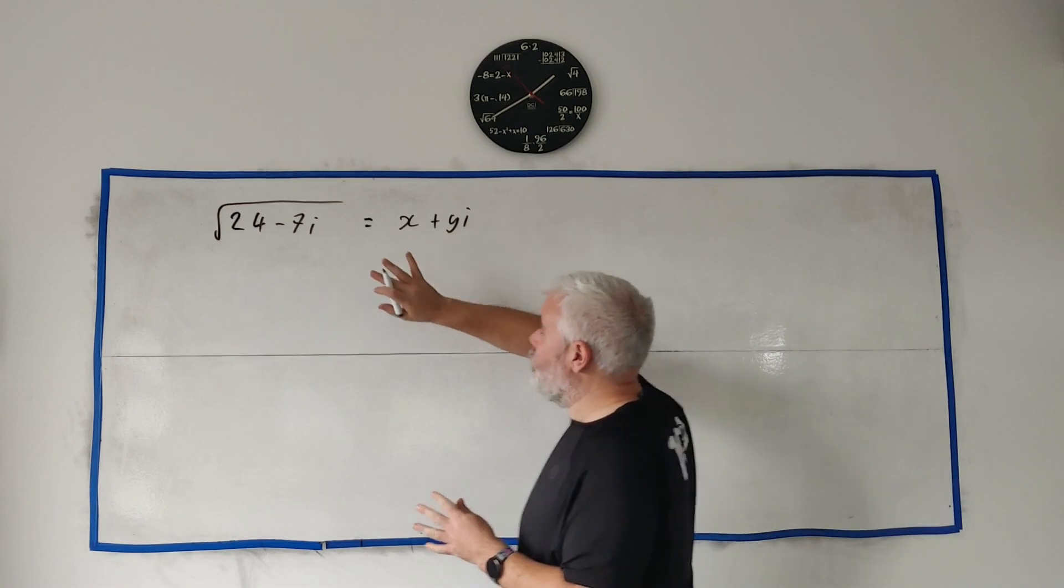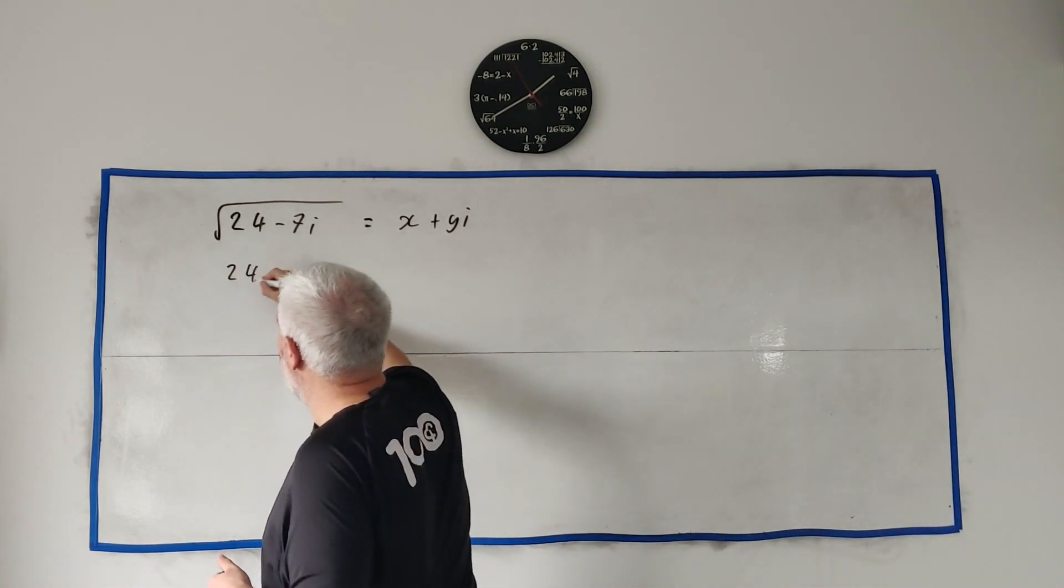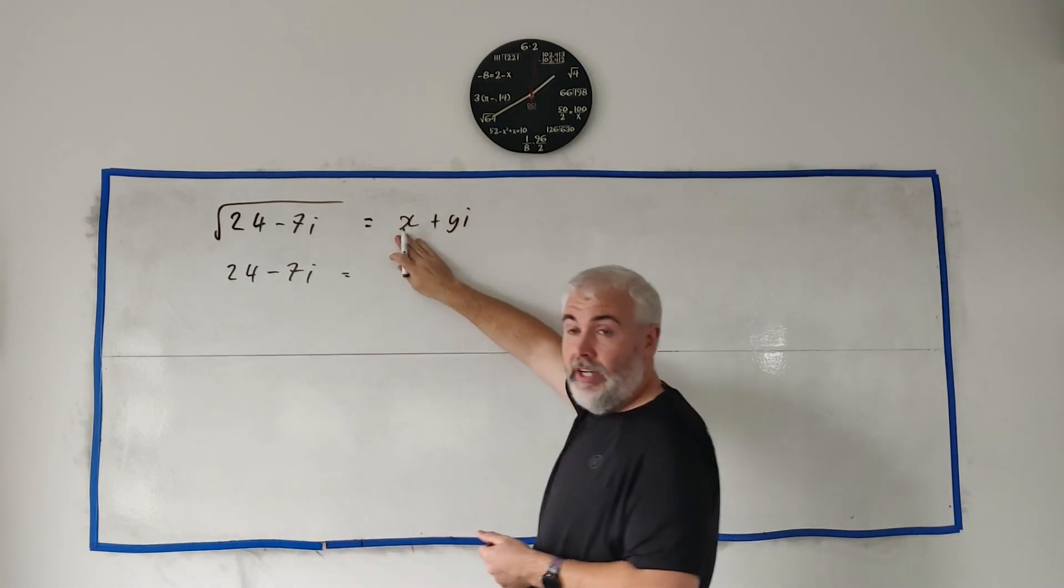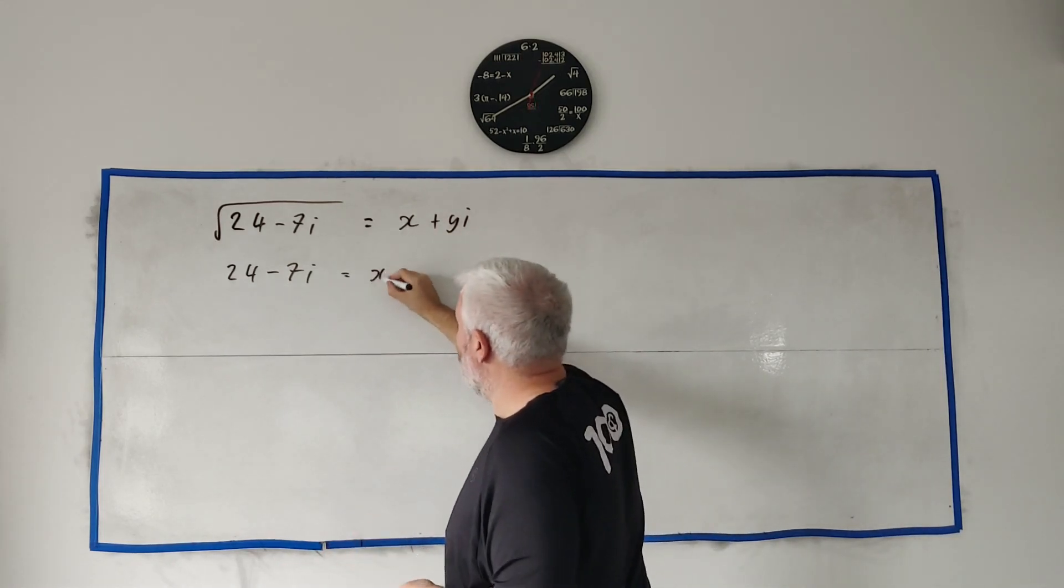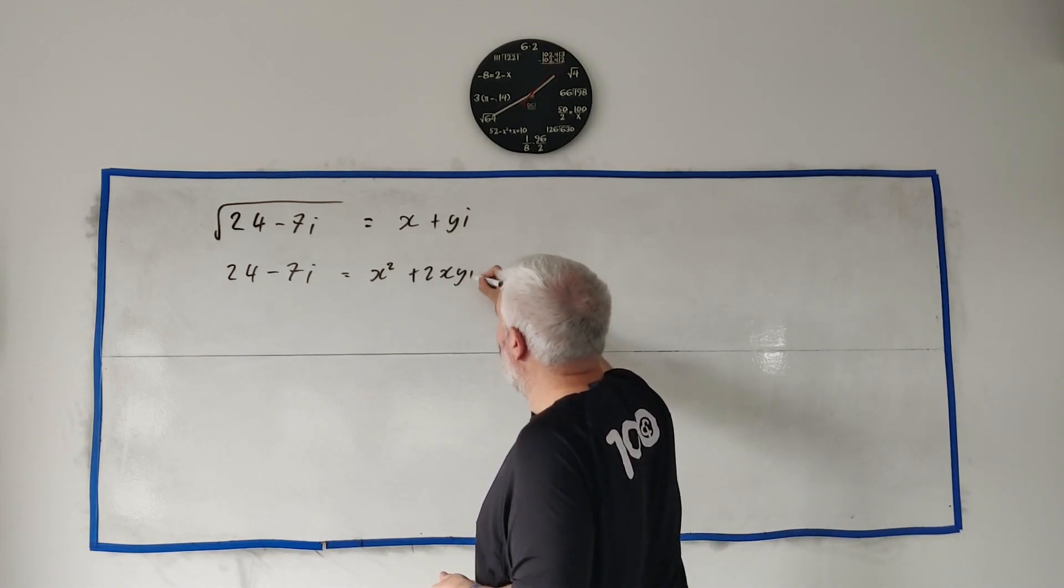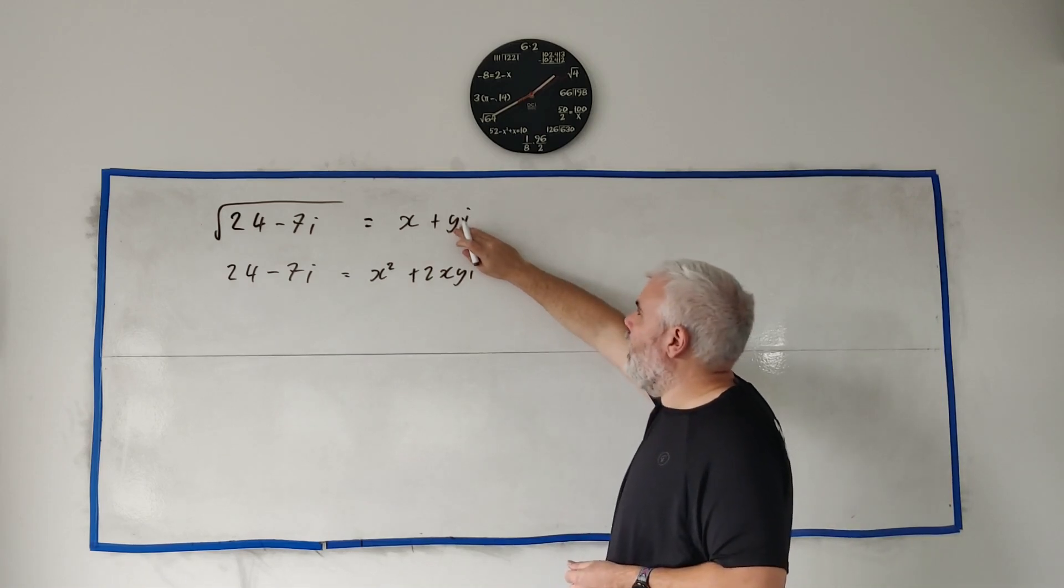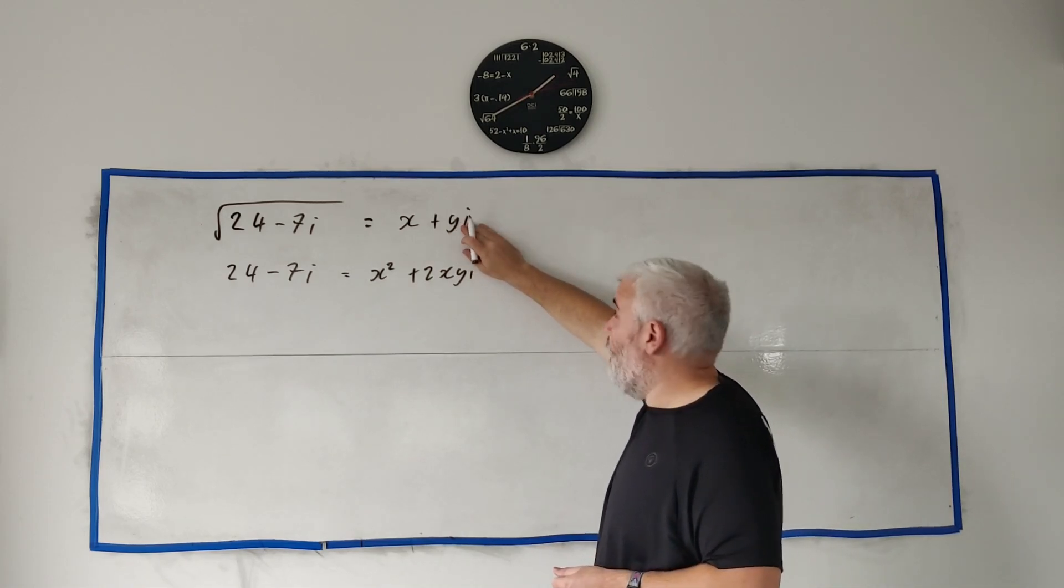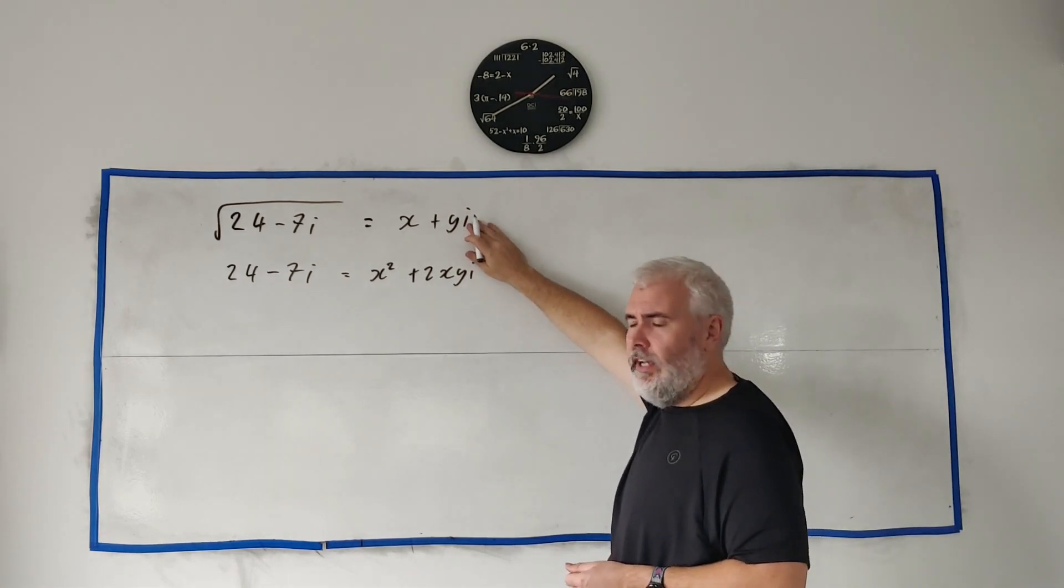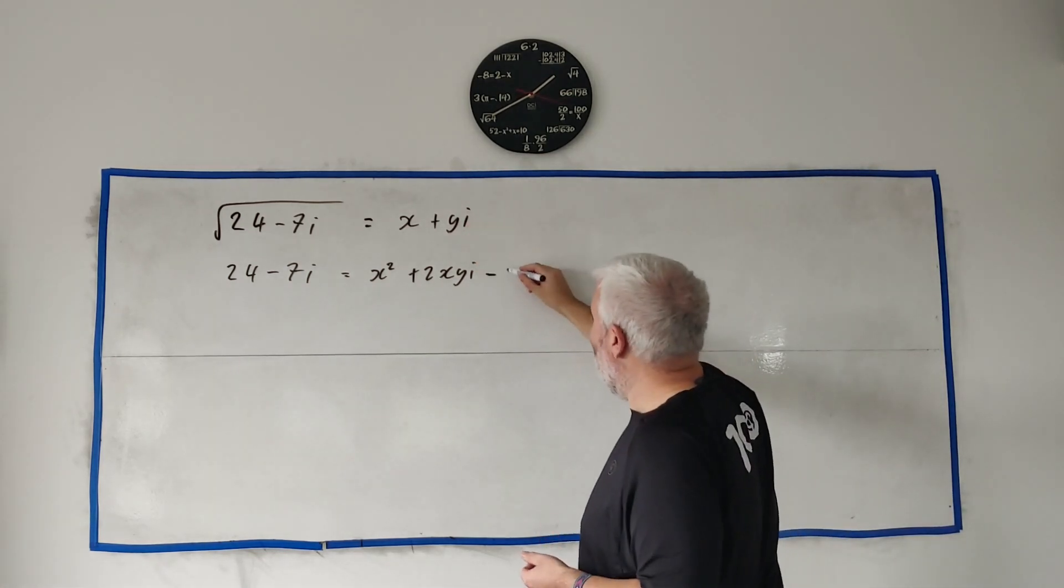So let's do that. Let's get the square of both sides—this one's easy, it's 24 minus 7i. The right hand side, if we square this, we'll get x squared, x times y we'll get two of them so 2xyi, and we'll get y by y and i by i that'll turn out as y squared times i squared.